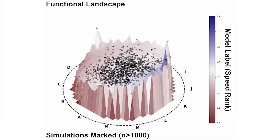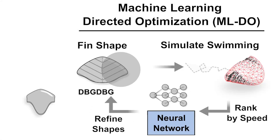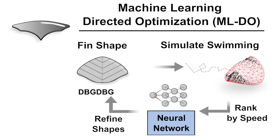By doing that we're refining and allowing the machine learning model to understand what makes a good ray. It creates an iterative loop where the model gets better and better at approximating a ray's actual function.